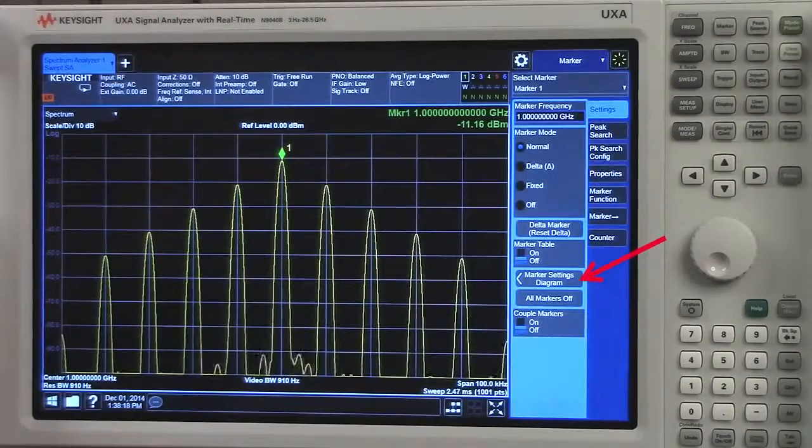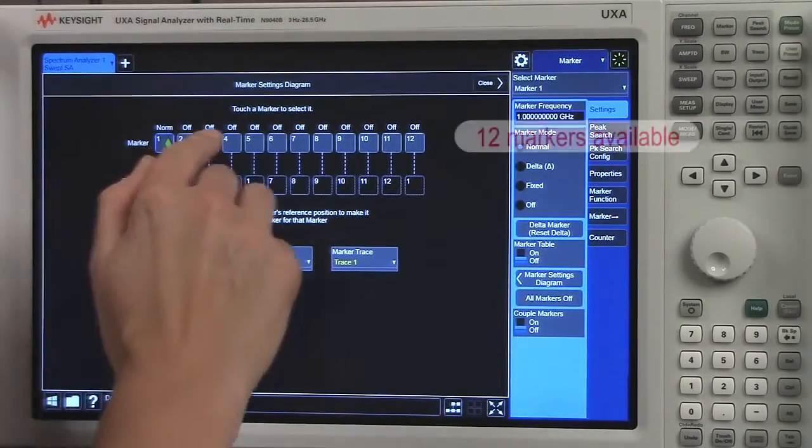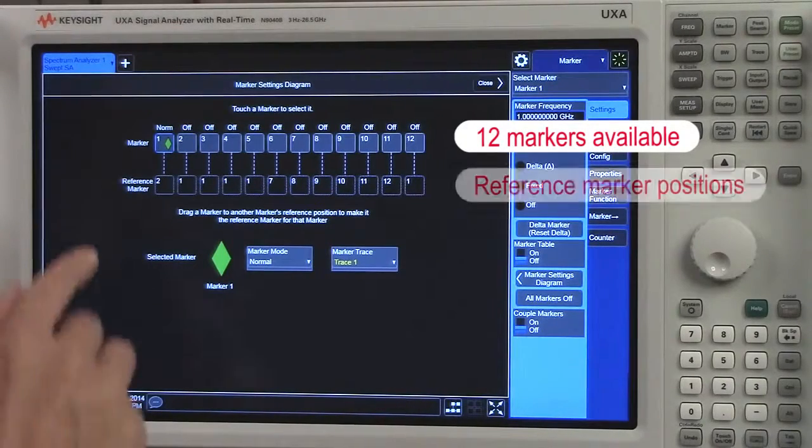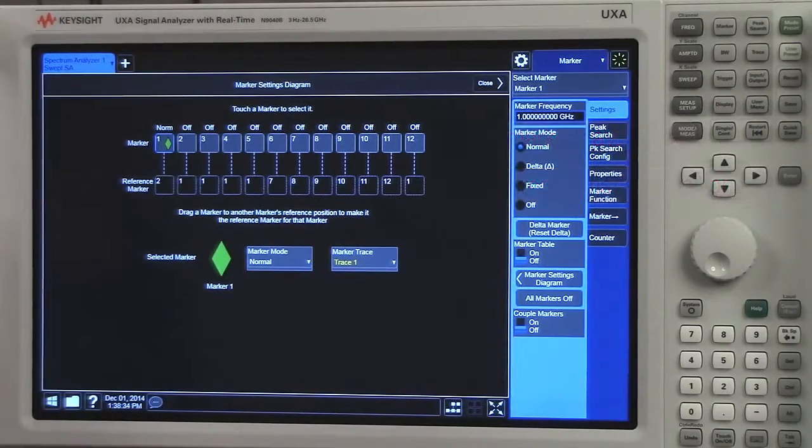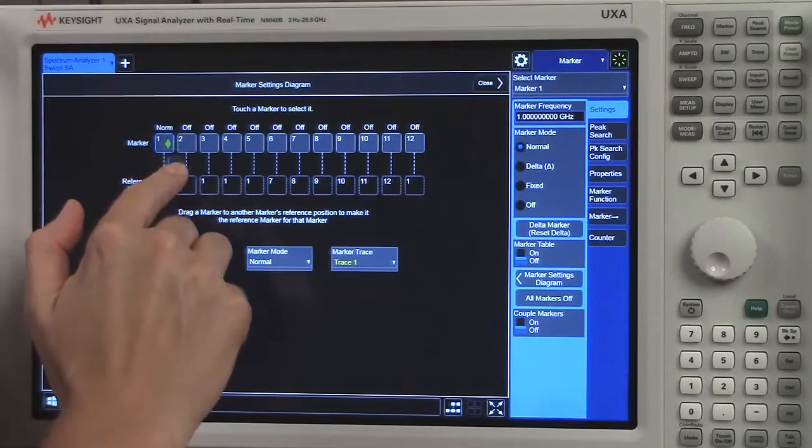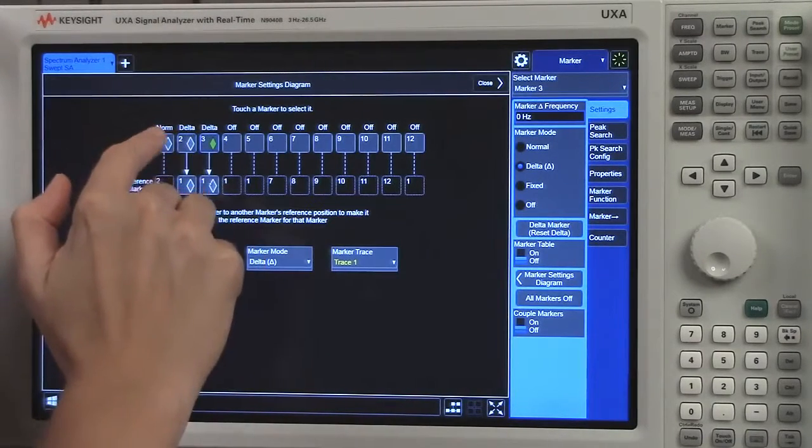We have a new feature, it's called the marker settings diagram. We have 12 markers that are available to set. We also have reference marker positions. I can drag my marker one to the reference marker position. I'll do this for four of the markers.